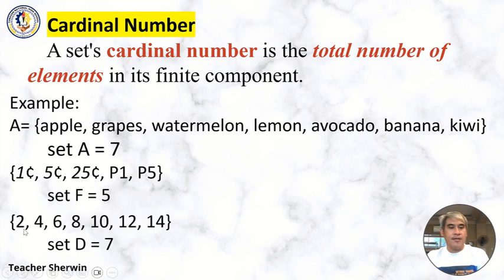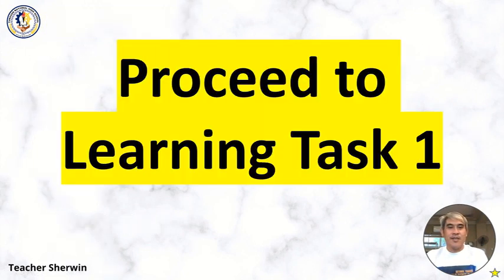How about for set D? One, two, three, four, five, six, seven. So the cardinal number is seven for set D. That is how we get the cardinal number. Let's proceed to learning task one.